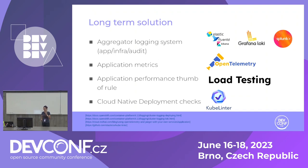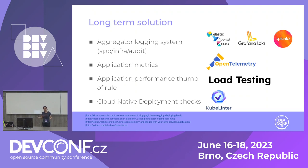Another important long-term solution is application metrics, and this is super nice with OpenTelemetry — there will be a talk on this later today, which I highly recommend. OpenTelemetry is a big open-source project, and having application metrics helps so much. It can actually prevent or predict certain issues, especially if they are load-related.